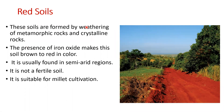Red soils are formed by the weathering of metamorphic and crystalline rocks. The presence of iron oxide makes the soil red to brown in colour. It is usually found in semi-arid regions but is not a fertile soil. It is suitable for millet cultivation. However, this soil accepts manure and fertilizers, and thus with their application, it is widely used for cultivation nowadays.